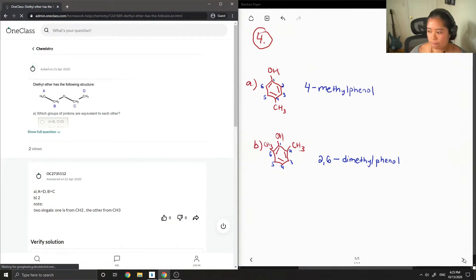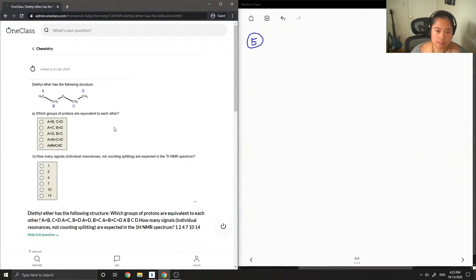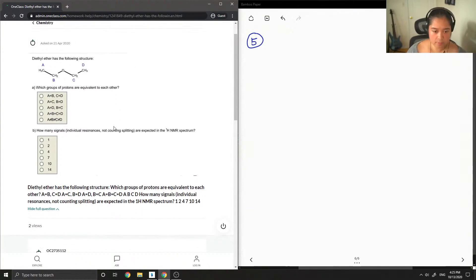So on to question number five. Diethyl ether has the following structure. Which groups of protons are equivalent to each other, and also how many signals, individual resonances not counting splitting, are expected in the HNMR spectrum?